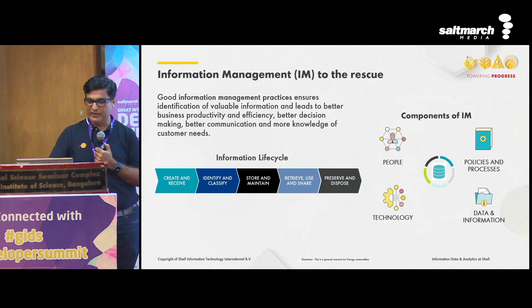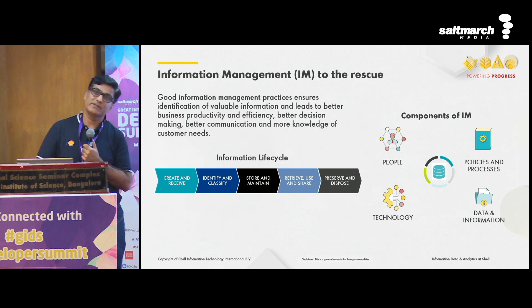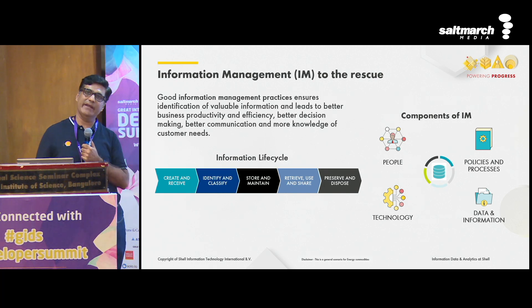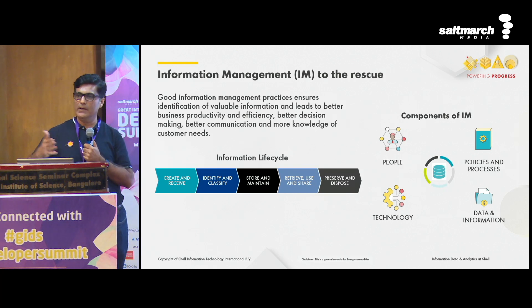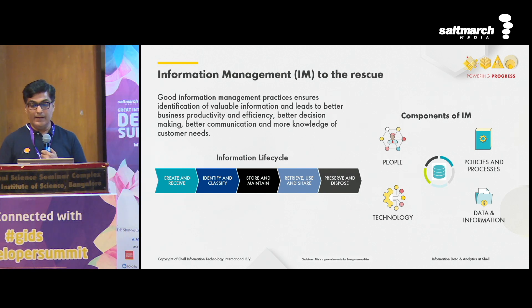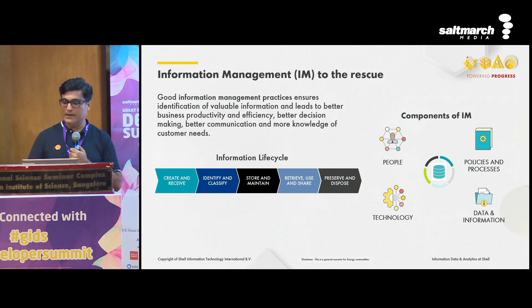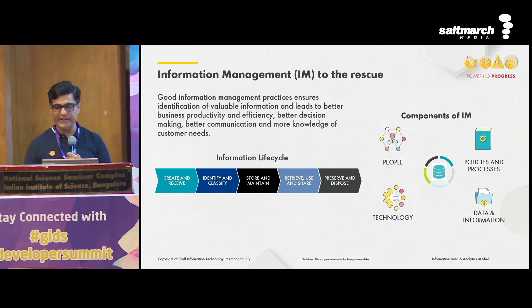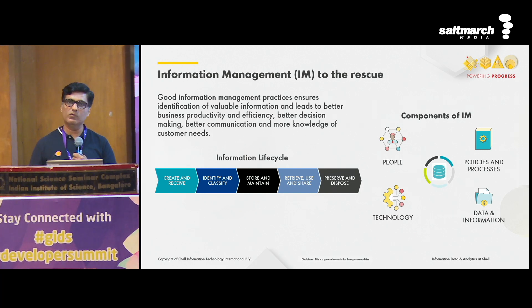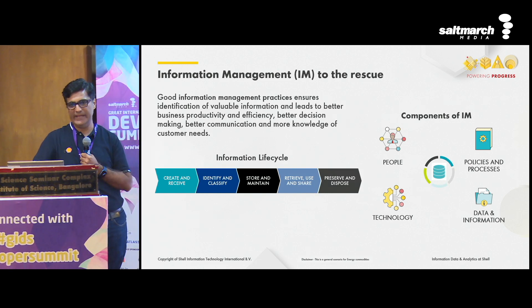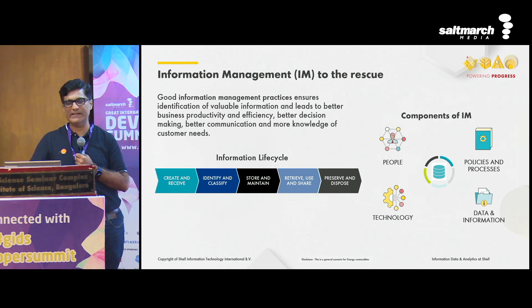Good information management practices ensure that we identify valuable information right at the start in the best way possible. No perfect solution yet, but maturity has increased and we are doing a much better job. By 2025, the global data sphere is going to grow to 175 zettabytes. 90% of it will be unstructured — images, documents, text analytics.